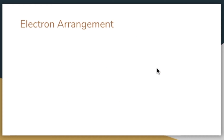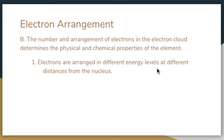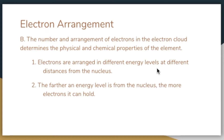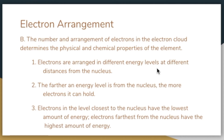The number and arrangement of electrons in an atom's electron cloud are responsible for many of the physical and chemical properties of that element. Although all electrons are somewhere in the electron cloud, some are closer to the nucleus than others — these different areas are called energy levels. Each energy level can hold a maximum number of electrons. The farther an energy level is from the nucleus, the more electrons it can hold. Energy level 1 can hold up to 2 electrons; level 2 can hold up to 8; level 3 up to 18; and level 4 up to 32.